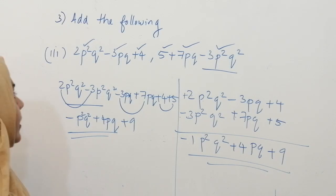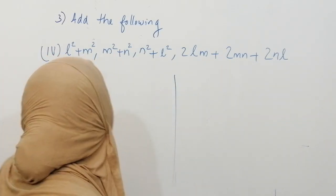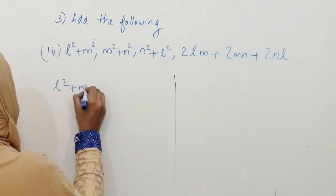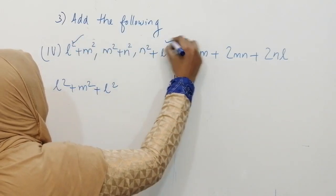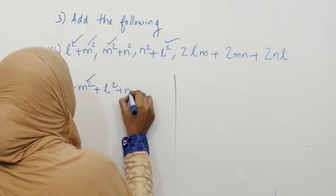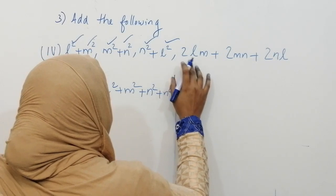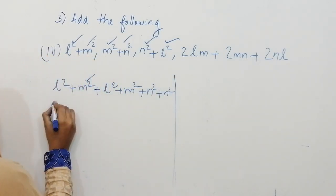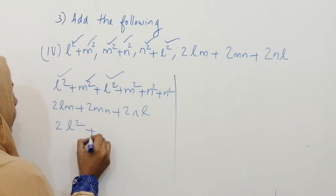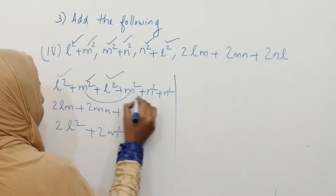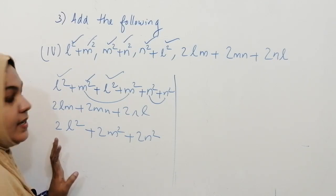Now the fourth question: l² plus m², m² plus n², n² plus l², 2lm plus 2mn plus 2nl. Writing l² plus m², the like term of l² is the l² from the third expression. The like term of m² is the m² from the second expression. There are two n² terms. The terms 2lm, 2mn, and 2nl are all unlike terms, so we just copy them. So: l² plus l² is 2l², m² plus m² is 2m², n² plus n² is 2n², and then 2lm plus 2mn plus 2nl.